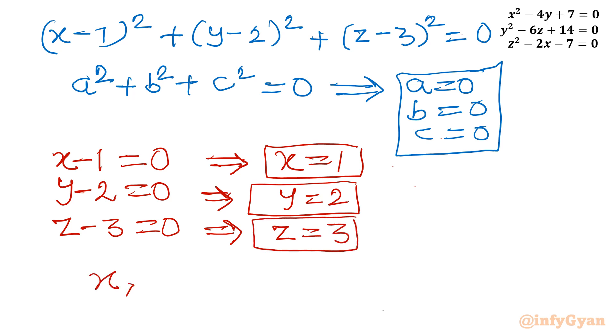So our ordered triplet will be, if I will write in this manner, the answer would be (1, 2, 3). This is our answer. And let's verify through our equations also. I will write here x, y, z equals 1, 2, 3.